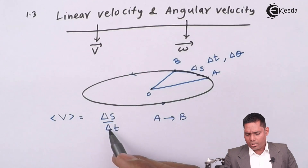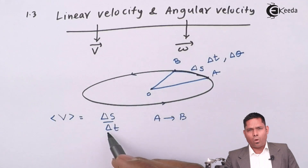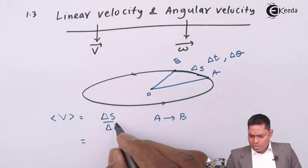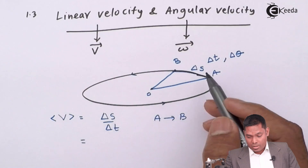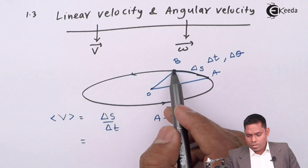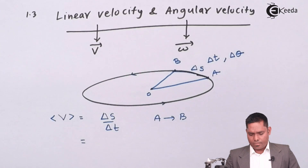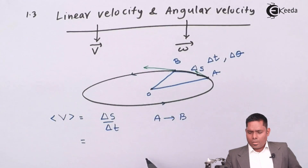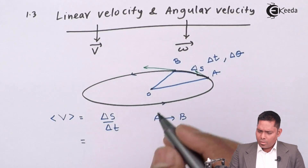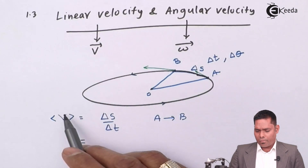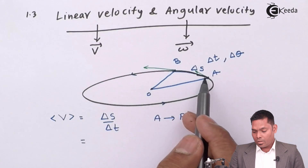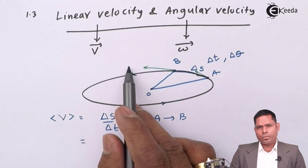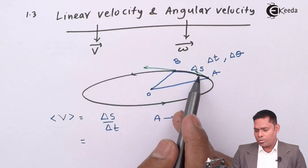If the distance is large and the time is long, I cannot say this is the velocity at A or the velocity at B, because the velocity is always tangent to the curve. At A, the velocity direction is one way; at B, it is another. The average velocity direction is along the direct line joining A to B.